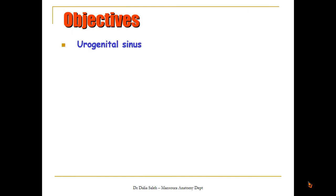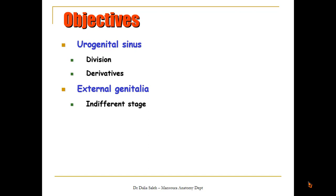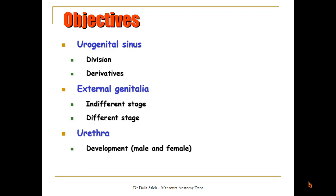As-salamu alaykum wa rahmatullah wa barakatuh. To carry on with the Special Embryology lecture, I'm going to cover in this presentation the development of the external genitalia and the urethra. I'm Dr. Dalia Saleh, Professor and Head of Anatomy Department at Manchour University. The objectives of my presentation will be: we will talk about the development of the urogenital sinus and its division and derivatives, then discuss the development of the external genitalia at different stages, and the development of the urethra both in male and female, including its anomalies.